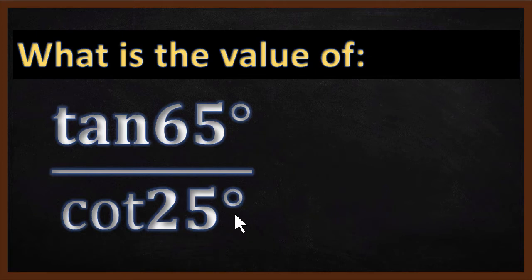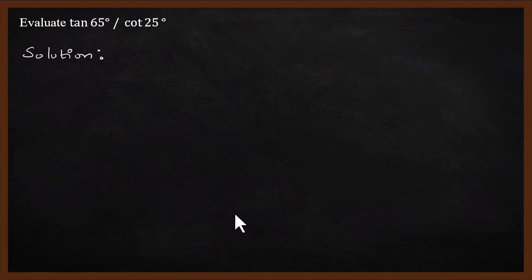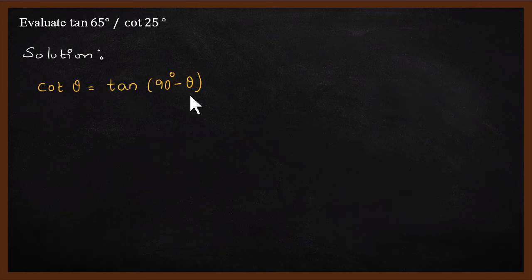Let us see how to solve this. We will use complementary angle formula. In this case, we use tan(90° - θ) equals cot θ formula. Tan 90° minus theta equals cot theta.